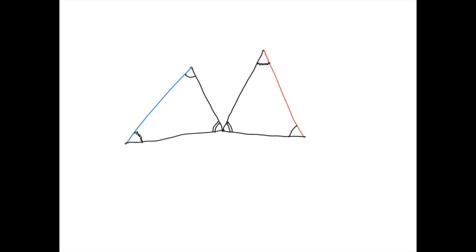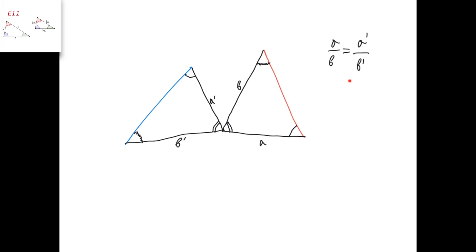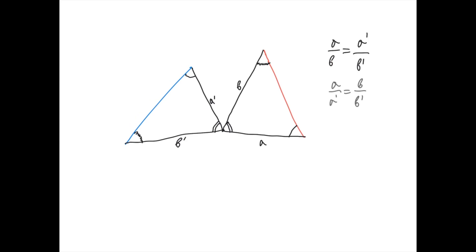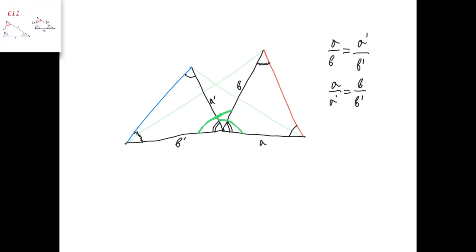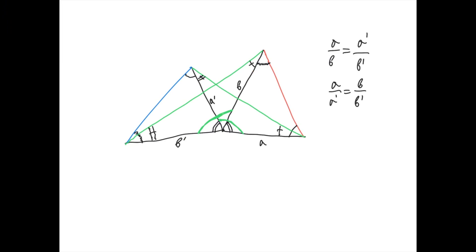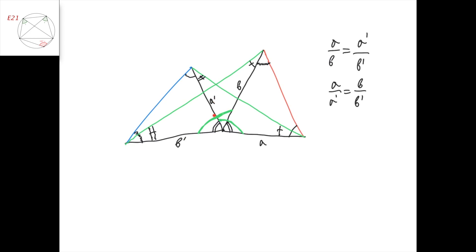In fact, the most common approach when noticing a spiral similarity is to just work with the ratios of the sides. From the given similar triangles, we have that a divided by b equals a prime divided by b prime. Therefore, a divided by a prime equals b divided by b prime. And by using this, and by noticing that the two green angles on the picture are equal, we can conclude that this triangle is similar to this triangle. Therefore, this angle equals this angle, and this angle equals this angle. Hence, since this one equals this one, we know that this is a cyclic quadrilateral, and since this one equals this one, we know that this is also a cyclic quadrilateral.